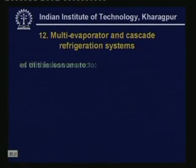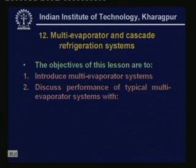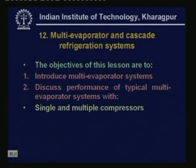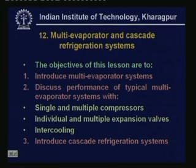Welcome back. In the last lecture, I introduced multistage vapor compression refrigeration systems and we discussed multi-compression systems with flash gas removal, intercooling, etc. In this lecture, I shall discuss multi-evaporator systems and cascade systems. The specific objectives of this lesson are to introduce multi-evaporator systems, discuss performance of typical multi-evaporator systems with single and multiple compressors, individual and multiple expansion valves, intercooling, and finally to introduce cascade refrigeration systems.